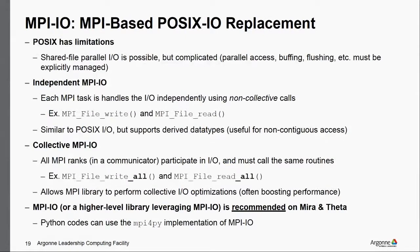MPI-IO is really the recommended way to do parallel IO on our systems. It's the MPI replacement for POSIX interactions with the file system. It allows independent IO — each rank independently interacts with the file system without collective participation — and collective MPI-IO, where all ranks participate and the MPI-IO implementation can do optimizations for better file system access and performance. It's also worth noting that MPI-IO capabilities are enabled through MPI4Py for Python users.